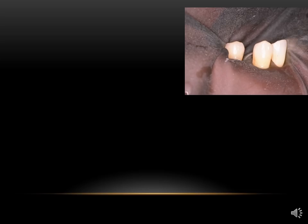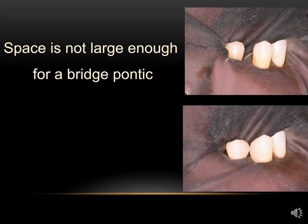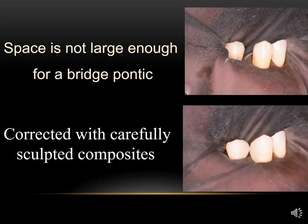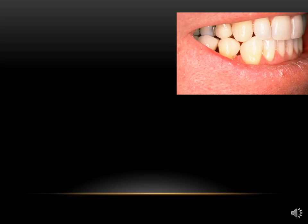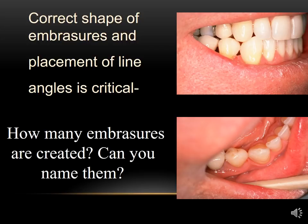Here's a space that is not large enough for a bridge — it looks too small to do a diastema closure. But if you can very carefully shape those embrasures, you can get away with a very conservative treatment. The placement and the shape of those line angles is very critical. From the incisal view, you can see how all four embrasures had to be sculpted just perfectly. Whenever we bring two teeth together, we create four embrasures: incisal, gingival, labial, and lingual. If we pay close attention to how we shape those, we can get a nice result.